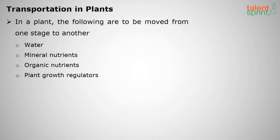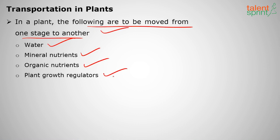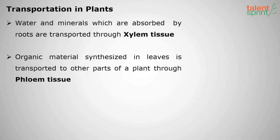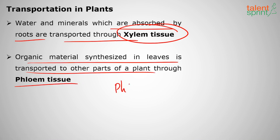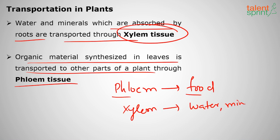Transportation in plants is very necessary for carrying out the photosynthesis process. In a plant, water, mineral nutrients, organic nutrients, and plant growth regulators need to be moved from one part to another. Water and minerals are absorbed by the roots and transported to other parts through xylem tissue. Organic material synthesized in leaves is transported to other parts through phloem tissue. To remember: phloem is for food, and xylem is for water or minerals.